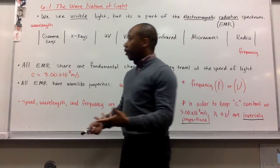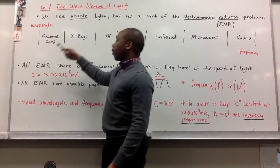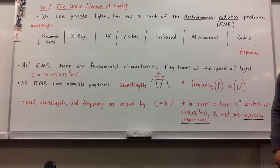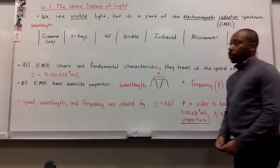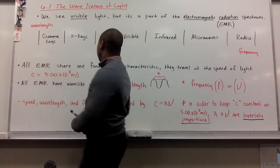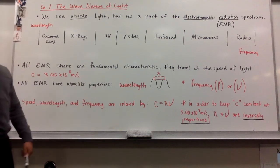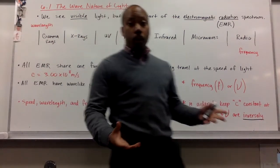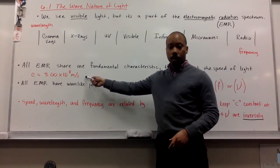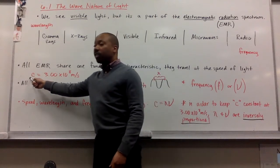Here are some of the parts of the spectrum: gamma rays, x-rays, UV rays, visible light, infrared, microwaves, and radio waves. All electromagnetic radiation share one fundamental characteristic - they all travel at the speed of light, which is 3.00 times 10 to the eighth meters per second. It's given the variable C.